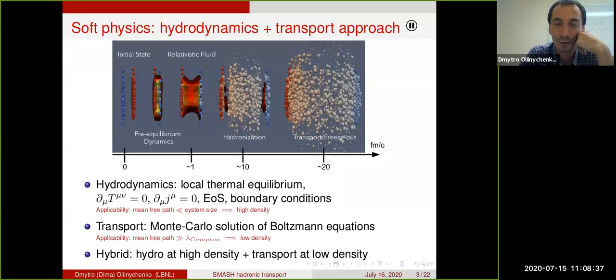This corresponds to the dilute phase of the collision. Why does it make sense to use both hydrodynamics and transport? It is not so easy. It means that you have to combine codes, but it also means that each code is applied in its region of applicability. Hydrodynamics needs local thermal equilibrium and it needs that the mean free path is much smaller than system size.